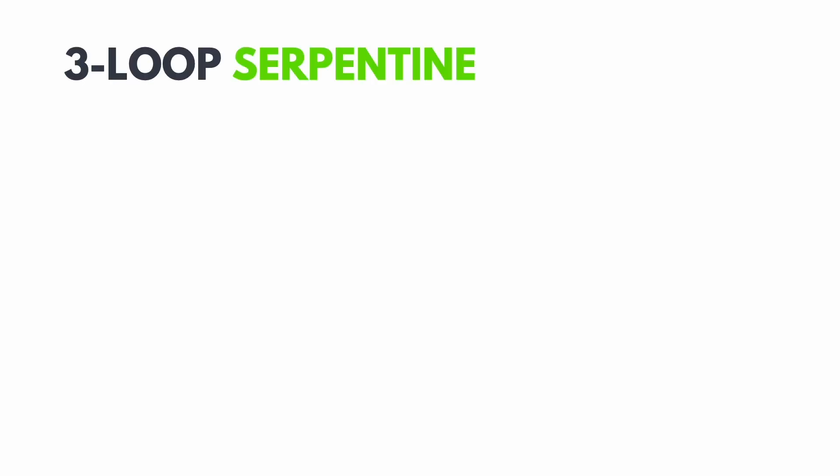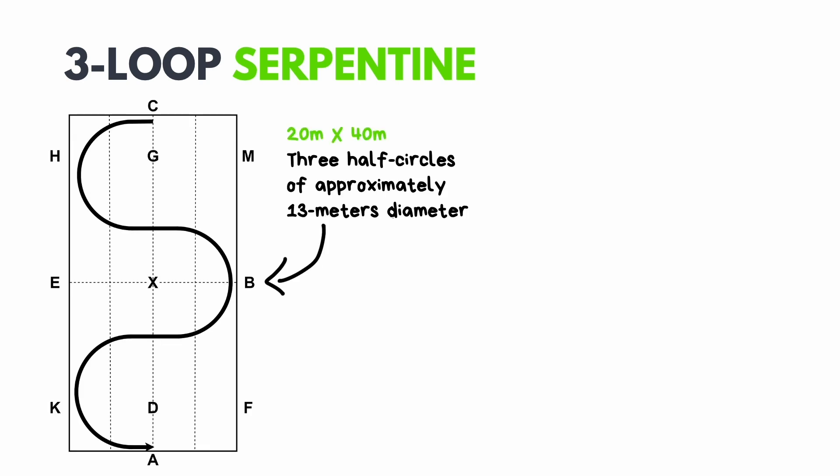First up we have the three-loop serpentine. When this exercise is ridden in a 20 by 40 arena, you're going to ride three half circles which are approximately 13 meters diameter each.